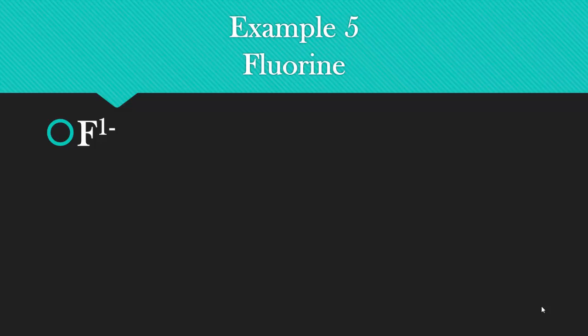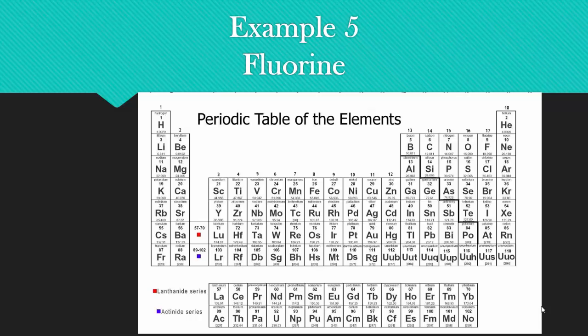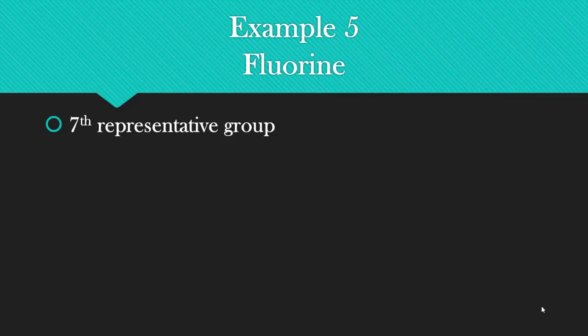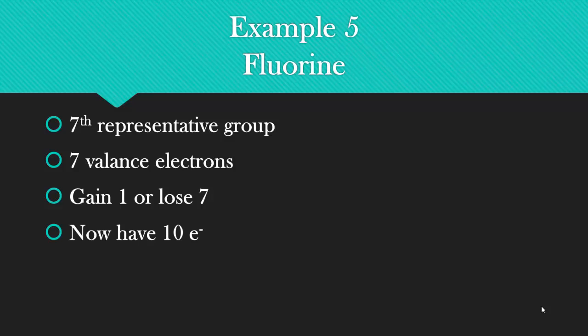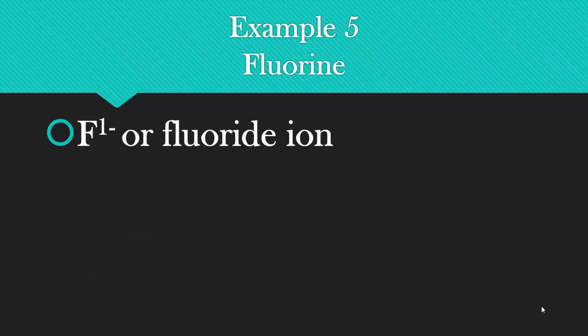Correct answer here is F1 minus or the fluoride ion. How did we get this? Fluorine is here, and notice it has an atomic number of nine. It's in the seventh representative group. It has seven valence electrons. Gain one or lose seven. Obviously you want to gain one, so you've gone from nine to ten electrons, but you stayed with nine protons. Nine minus ten is minus one, and so what you end up with is this for the correct answer.